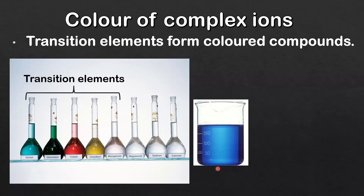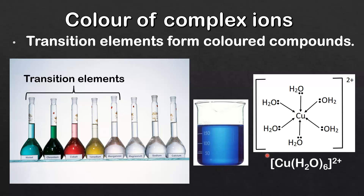Here's another example of a transition element that forms a colored compound in solution. This is a solution of copper 2 sulfate. When dissolved in water the copper 2+ ion forms a complex ion and the name of this complex ion is the hexa aqua copper 2 ion. Here's the formula for the complex ion and as you can see it's got a 2+ charge.